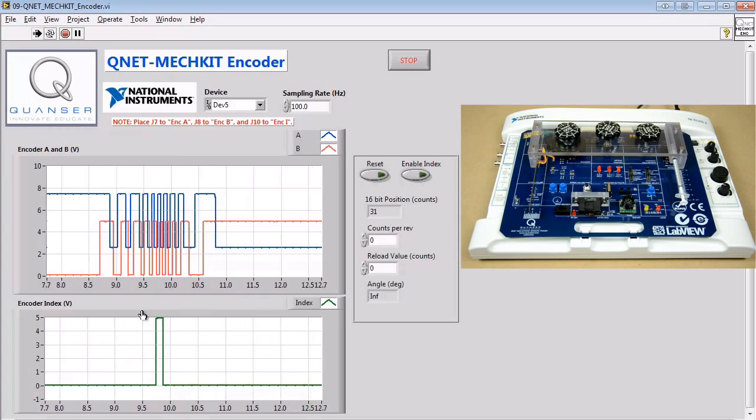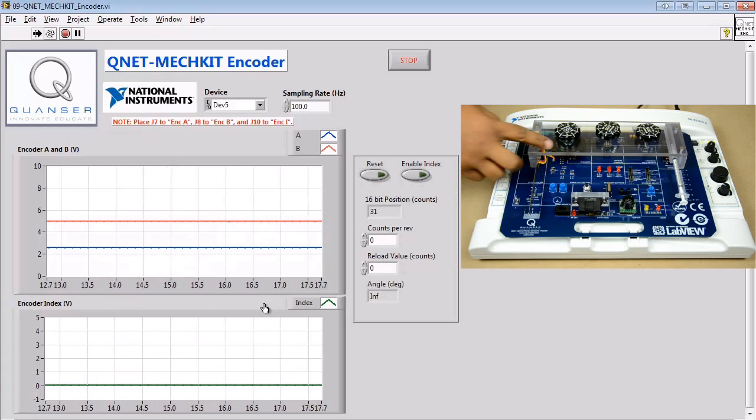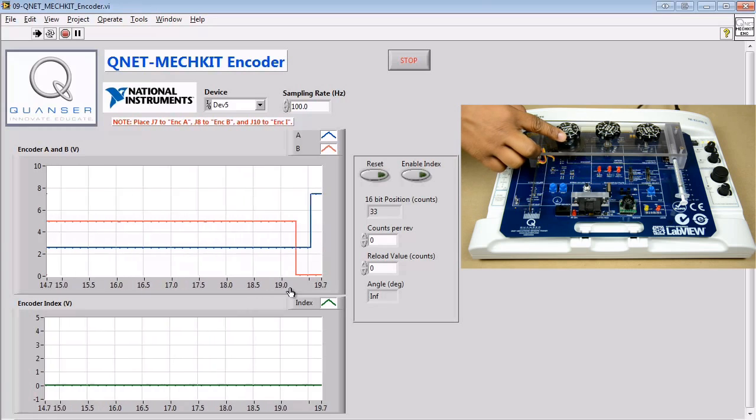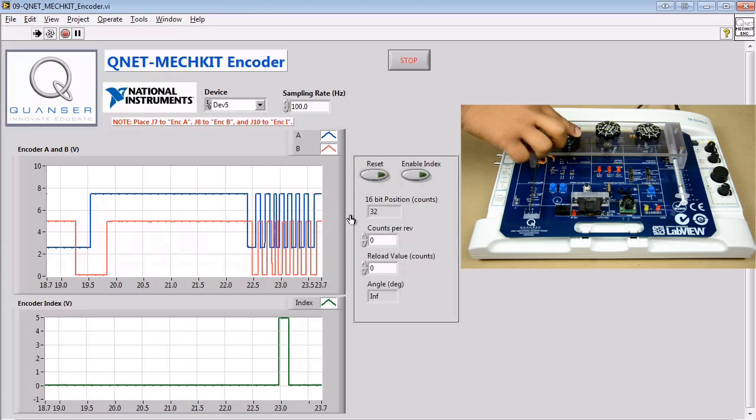Next, we'll perform calculations to find our counts per revolution values and the reload values. To do this, we reset the encoder when the zero value on the knob is pointing upwards, and then spin the knob one full revolution.